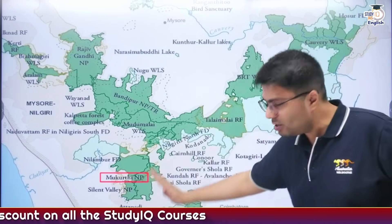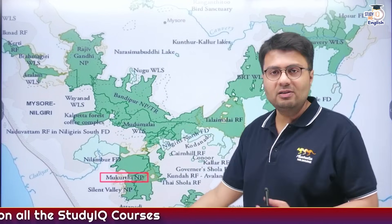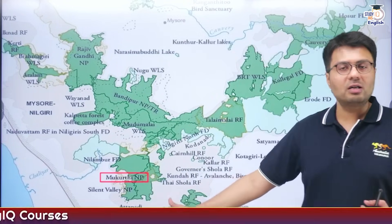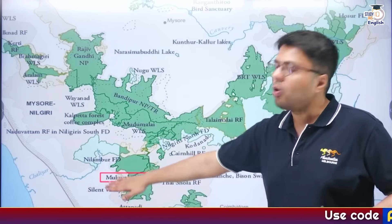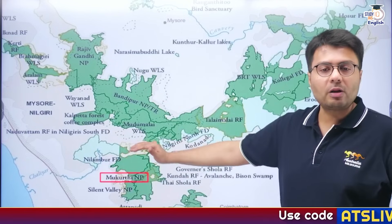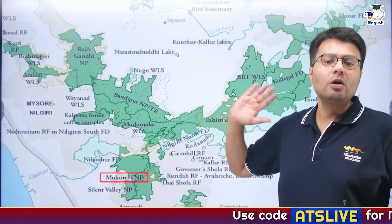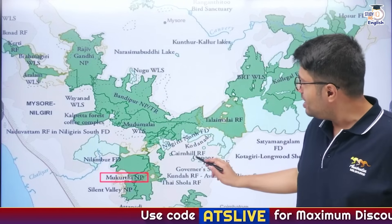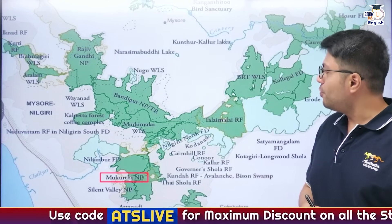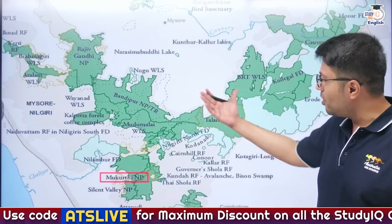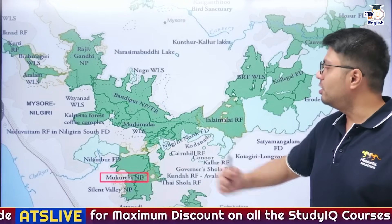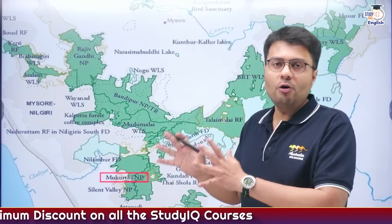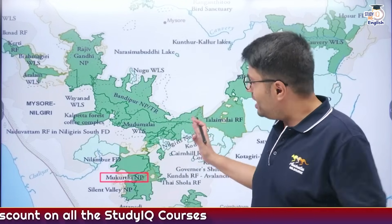South of this region are districts like Trichy and Madurai. Mukurti National Park is in the northwest corner of Tamil Nadu, very close to the picturesque location of Ooty and Coonoor Hills, and also to the district of Coimbatore, a major industrial region of Tamil Nadu.